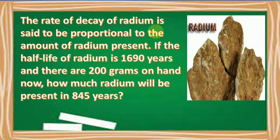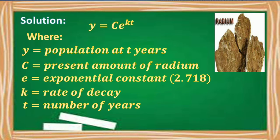Let us now solve a problem involving exponential decay. The rate of decay of radium is said to be proportional to the amount of radium present. If the half-life of radium is 1,690 years and there are 200 grams on hand, how much radium will be present in 845 years? We will use the equation y = c · e^(kt), where y is the population at t years.